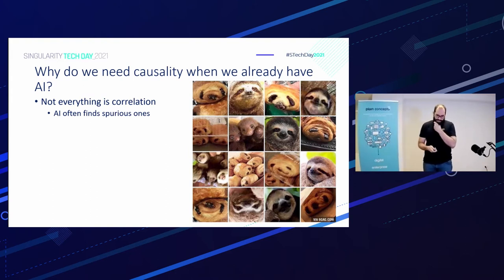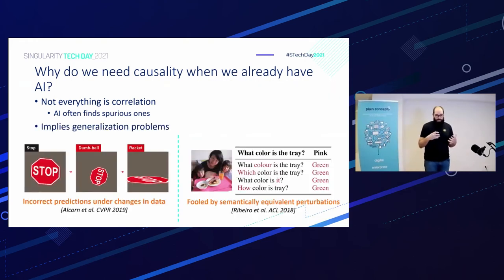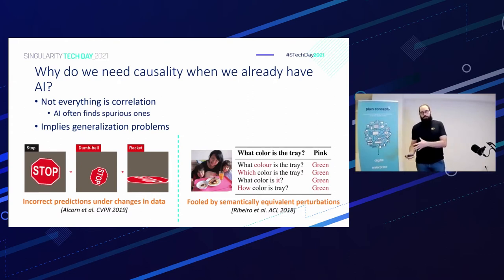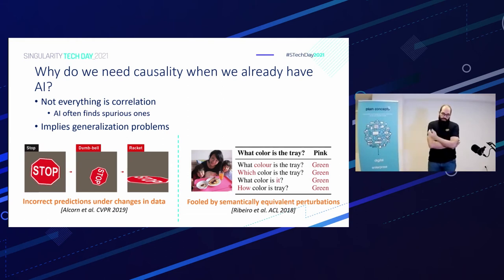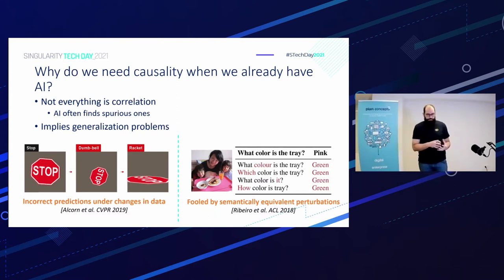Another issue is that AI often finds spurious correlations — for example, the slope of pen and chocolate consumption being very similar. Sometimes the model hasn't seen certain data, so it doesn't generalize correctly. If some data is not inside the training dataset, we get problems with inference. We can also have different views of data — like text versus image — that can deceive our model. That's why they aren't getting the real reasons inside the data.